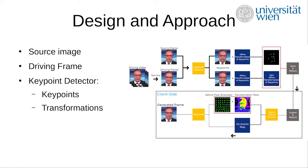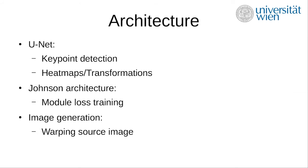This procedure has to be done for every frame in the segment before continuing to the next one, and these segments are later concatenated into one whole video. The architecture of the project has three main components: the U-Net architecture integrated as the key point detector, an architecture by Johnson et al. referred to as the Johnson architecture trained with a loss function, and a generation module that warps the source image.